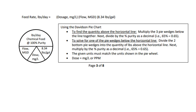If you are solving for a quantity above the horizontal line — that would be pounds per day at 100% purity — and it is not 100% pure, you are going to divide by the percent purity as a decimal. So 65% would be 0.65. If you are solving for one of the pie wedges below the horizontal line — such as million gallons a day or dose — you will multiply by the percent purity as a decimal. Above the line: divide. Below the line: multiply.